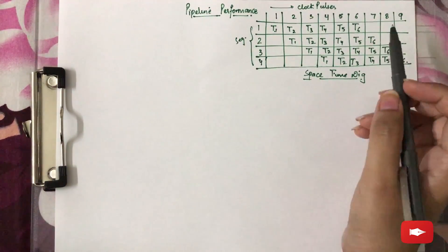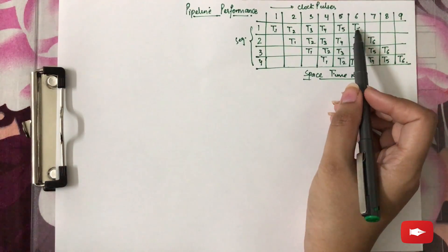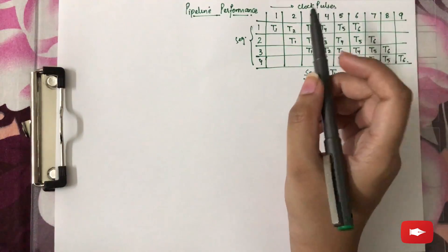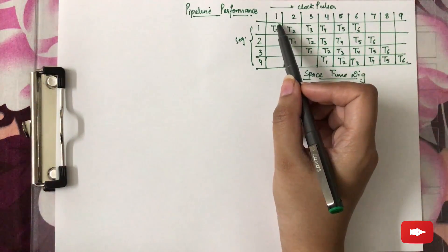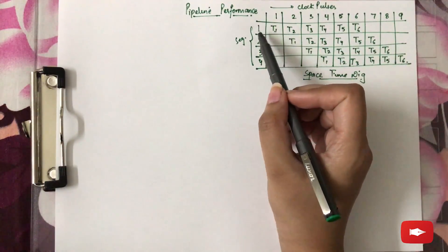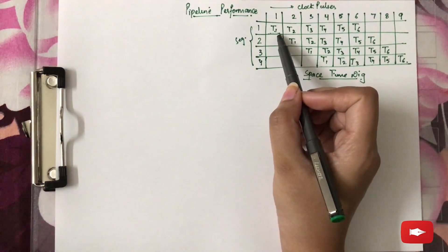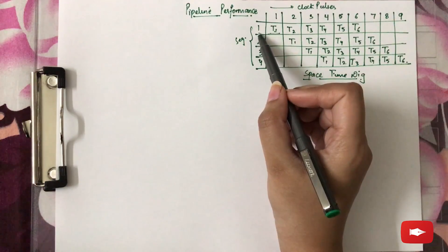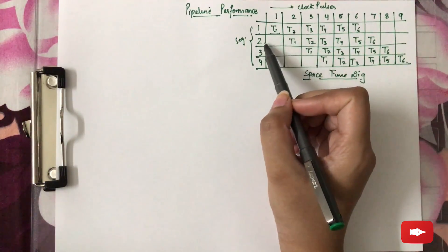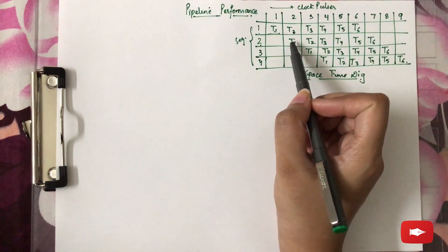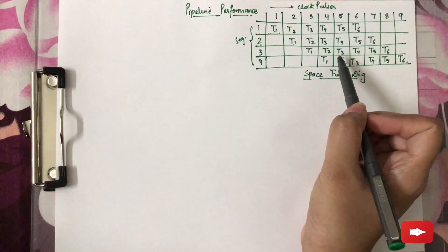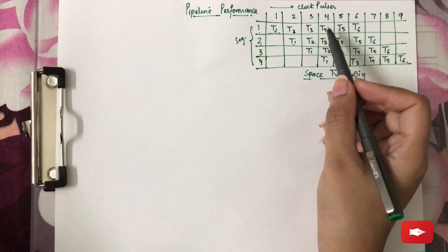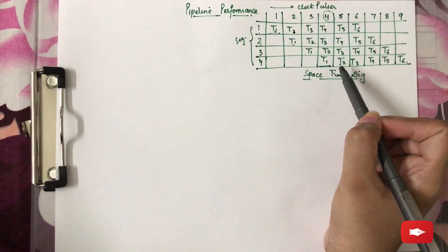This diagram shows the 6 tasks, T1 through T6, which are executed in 4 segments. Initially, in the first segment and first clock pulse, segment 1 is busy with T1. After the first clock, segment 1 will be busy with T2, and segment 2 will be busy with T1. Continuing in this manner, the first task T1 will be completed after the fourth clock cycle.